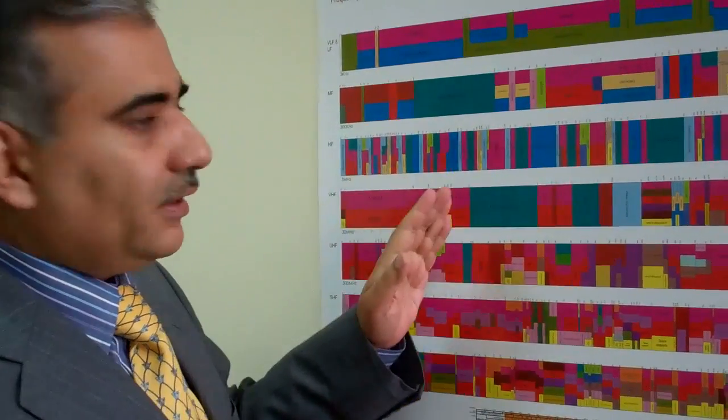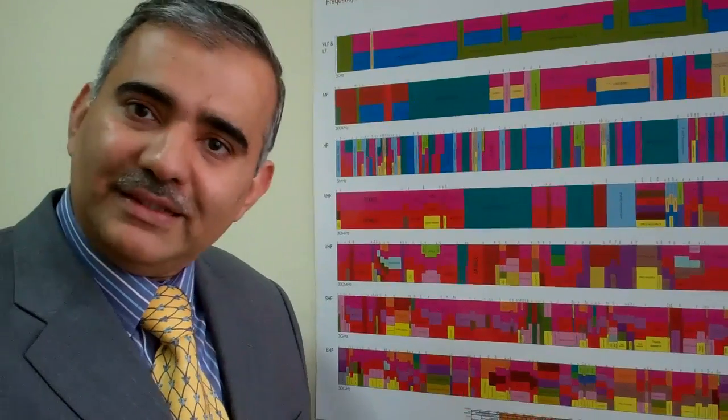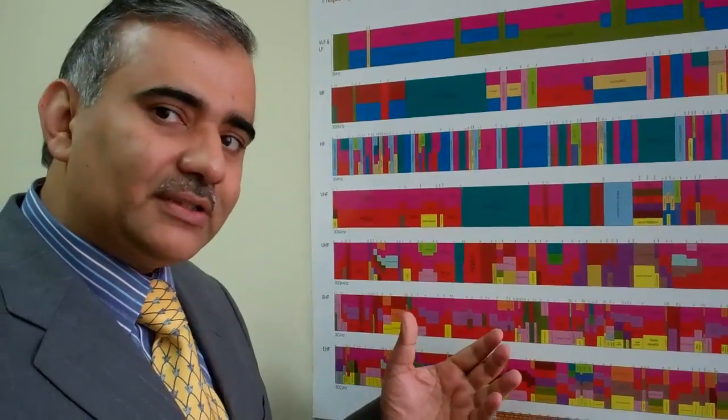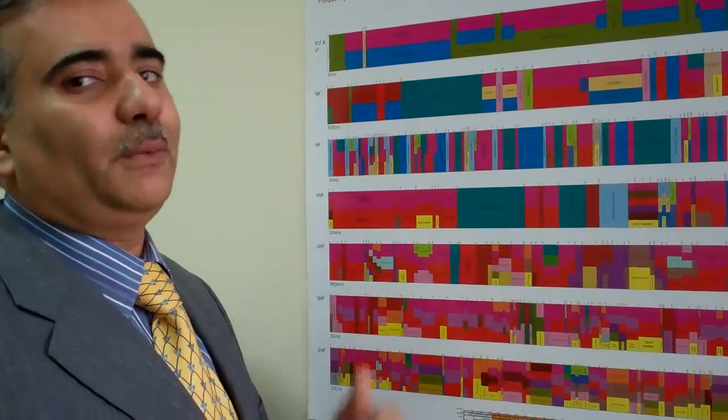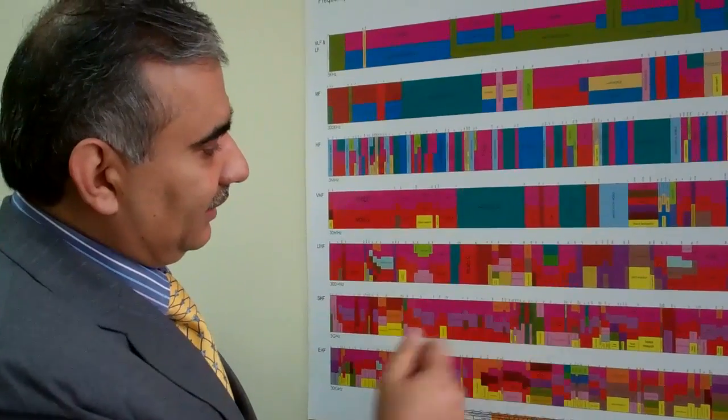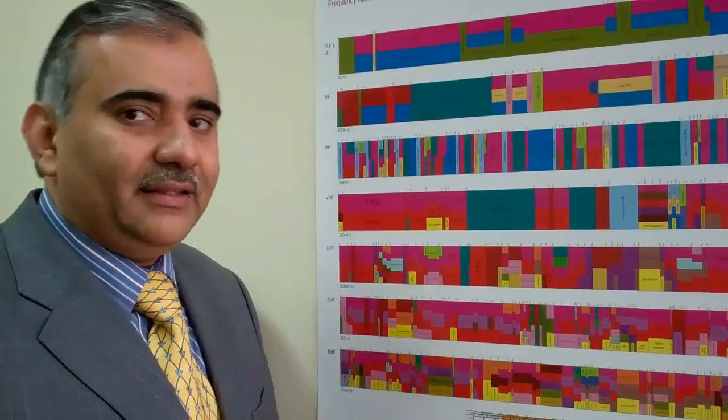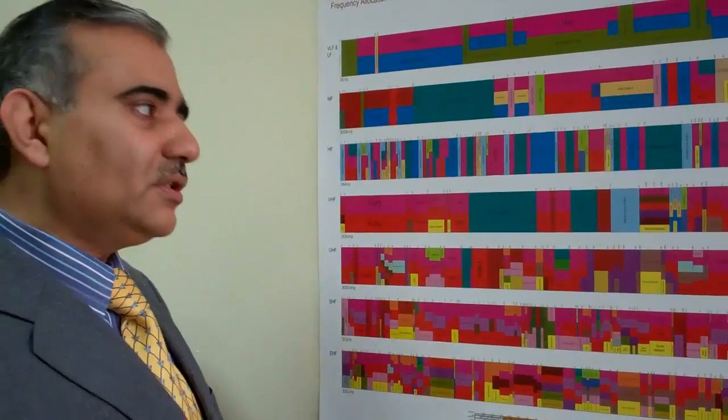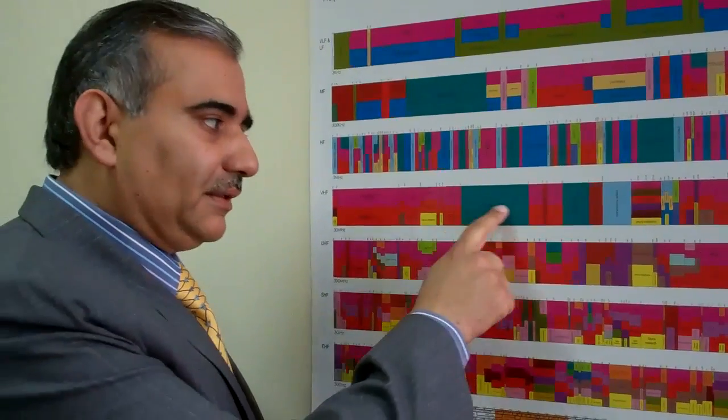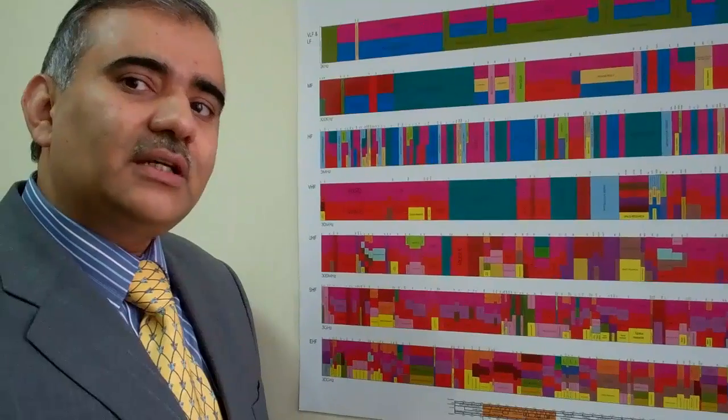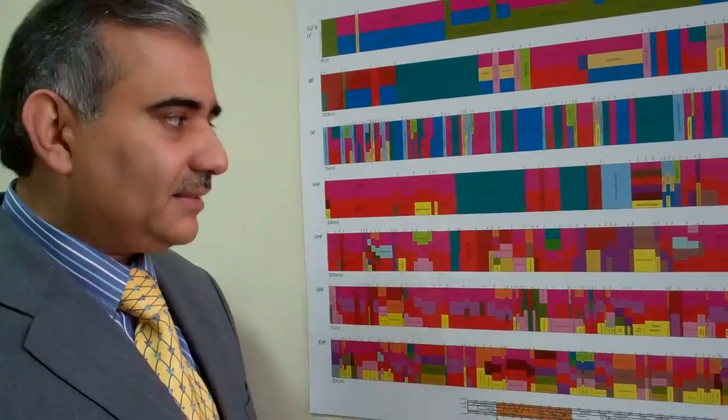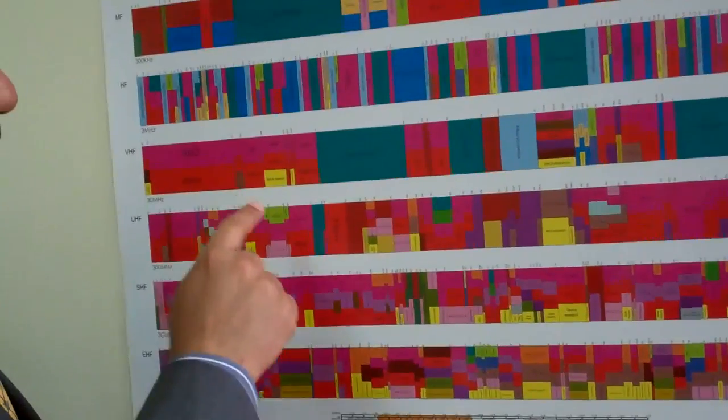Each of the radio services has a different frequency allocation and some radio services are sharing the same frequency range which we can see here and some radio services are on a priority than the other radio service. Those radio services are shown in capitals. And the radio services which are allocated on secondary basis, they are shown in small letters.